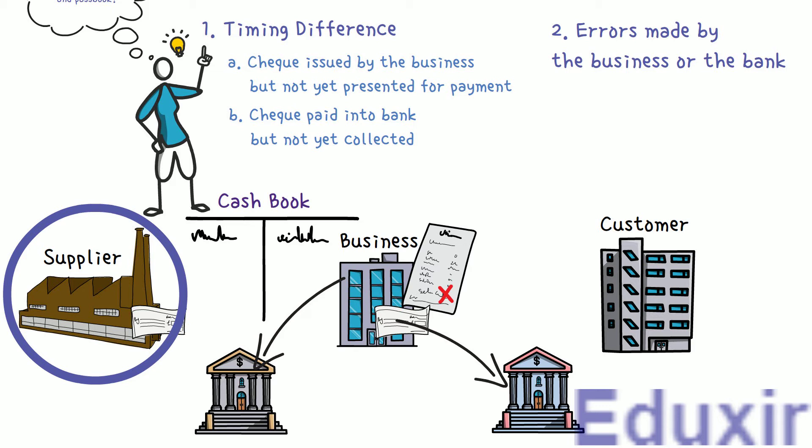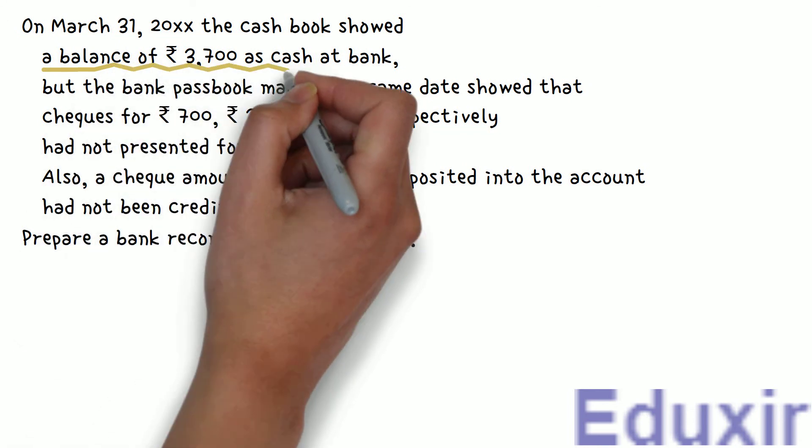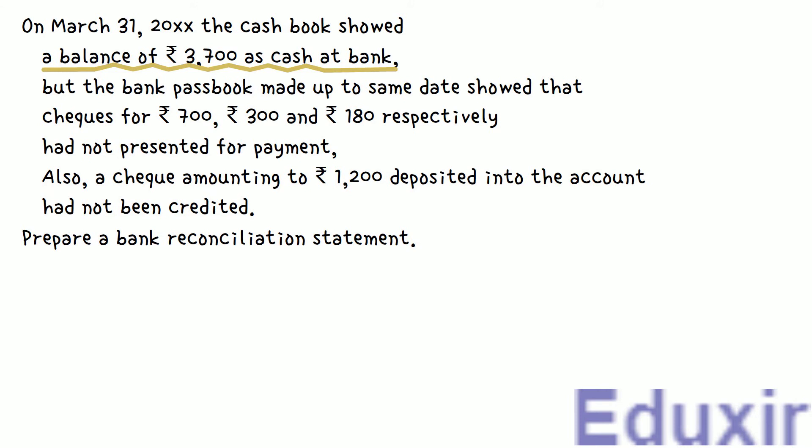As the problem does not have any particulars about errors made by the business or the bank, we will discuss those in other problems. With this information at our disposal, let us now proceed with the analysis of each detail in the problem. The balance as per the cashbook is 3700 rupees. Note that this is a debit balance, representing a favorable balance. The balance as per the cashbook is given and we need to find the balance as per the passbook.